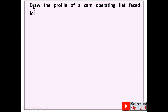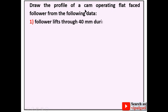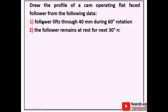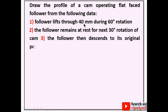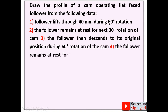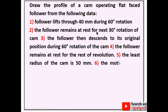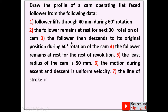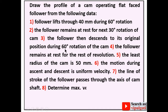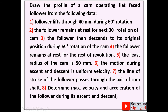Let us see the description through the profile of a cam operating a flat face follower from the following data. The follower lifts through 40 mm (follower stroke) during 60 degree rotation (ascent angle). The follower remains at rest for the dwell period, then descends to its original position during 60 degree rotation (descent angle). The follower remains at rest for the remaining dwell. The least radius of the cam is 50 mm. The motion during ascent and descent is uniform velocity. The line of stroke of the follower passes through the axis of the camshaft.